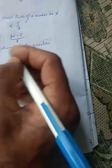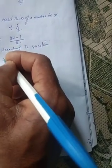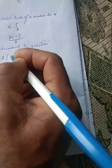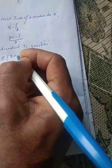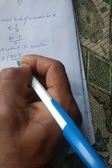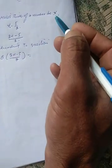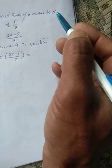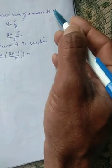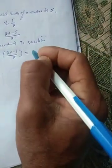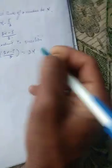According to the question, we multiply this result by 8: 8 into (2x minus 5) divided by 2 is equal to 3x. Three times the same number she thought of, so 3x.